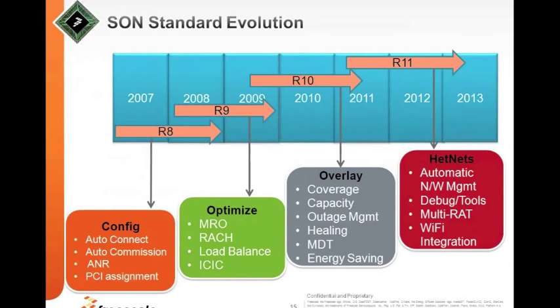Once configuration is done, the next step is optimization: mobility, robustness, access channel performance, load balancing — extremely important as user patterns change — and ICIC (inter-cell interference coordination), which is extremely important in a dense network to manage interference. There's also the overlay aspect, which talks about optimizing coverage when you underlay small cells within an existing macro network, optimizing both for coverage and capacity.